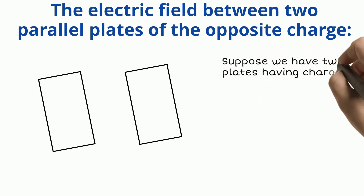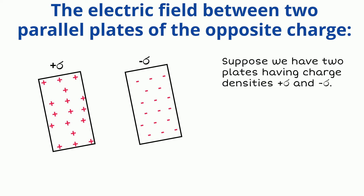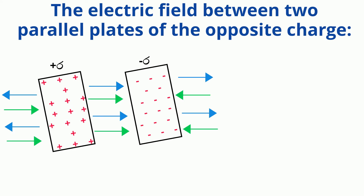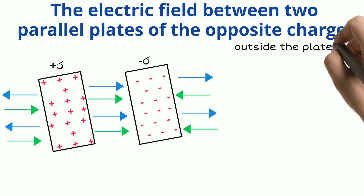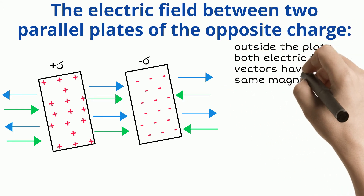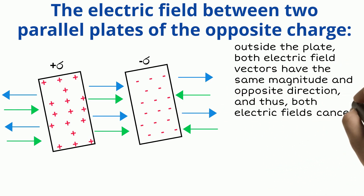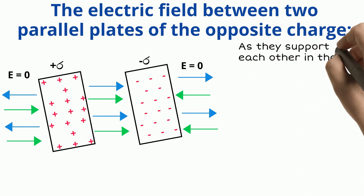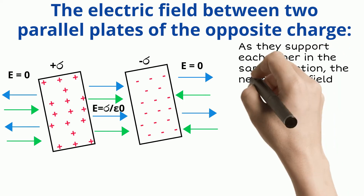The electric field between two parallel plates of opposite charge: suppose we have two plates having charge density plus sigma and minus sigma, separated by distance d. The plate with positive charge density produces an electric field E equal to sigma upon two epsilon zero, directed outward. The plate with negative charge density has the same magnitude but in the opposite inward direction. Using superposition, outside the plates the fields cancel — so E_out is equal to zero. Inside, both fields support each other, giving a net electric field of E equal to sigma upon epsilon zero.